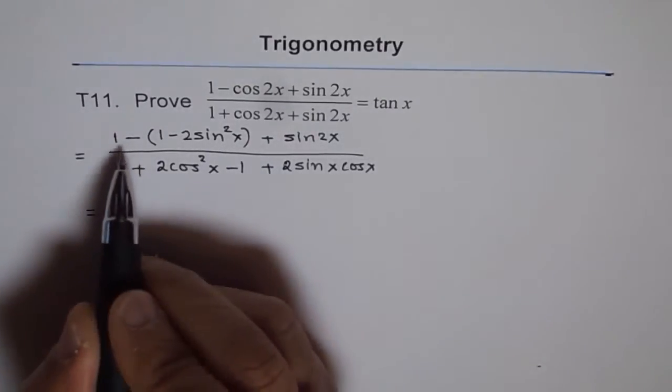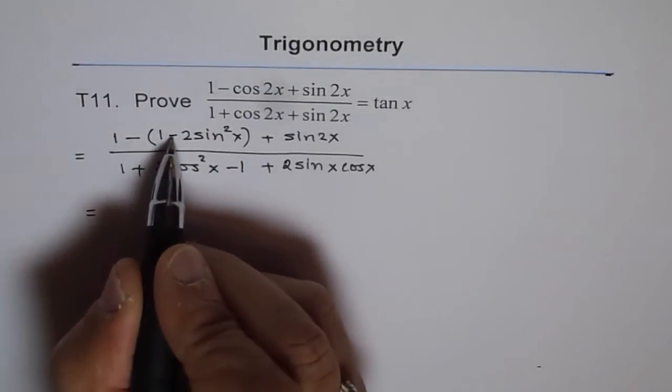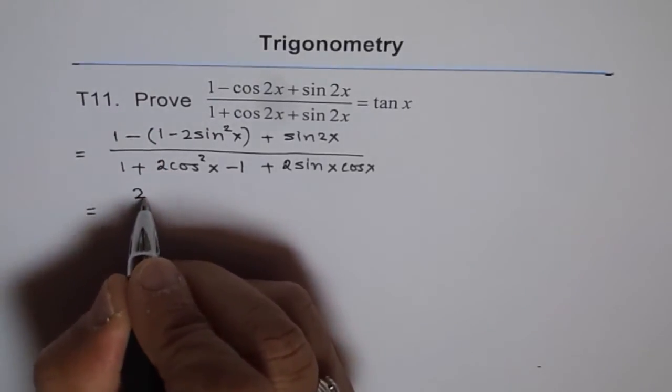Now, in the numerator, you see 1 minus 1 is 0. So we start with minus and minus becomes plus. So we have 2 sin square x.